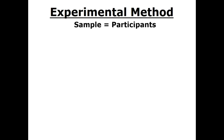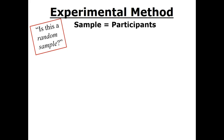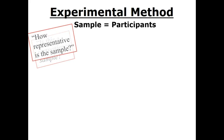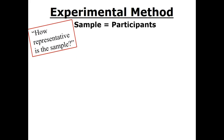The experimental method, as with all methods of research, starts with identifying participants. If we cannot observe the entire population of interest, then we must identify a sample of participants. At this point, you should be asking questions like: Is this a random sample? Is this a convenient sample? And how representative is the sample? Along with other questions about the sample, to think critically about the credibility of the research.